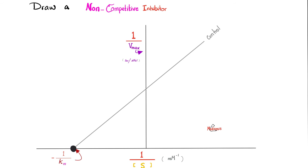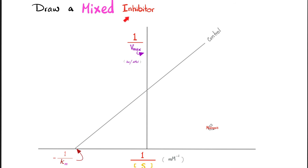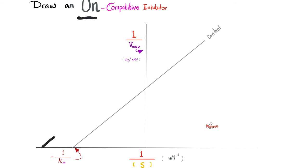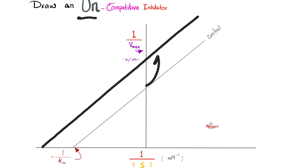Next, draw a non-competitive inhibitor: Km remains the same, but Vmax decreases (so 1/Vmax increases). Join those two points for the non-competitive line. For a mixed inhibitor, the key fact is that it intersects the control at a point neither on x nor y-axis. For an uncompetitive inhibitor, draw a line parallel to and above the control — above because Vmax decreases (1/Vmax goes up).